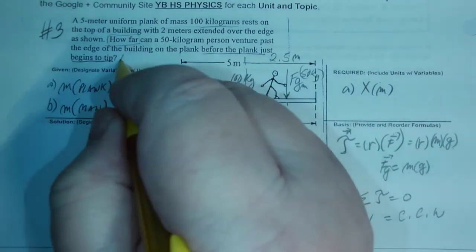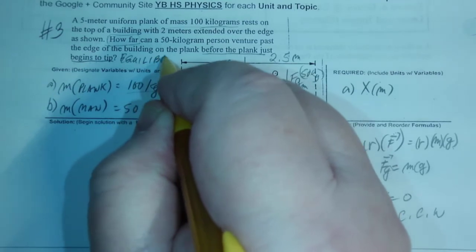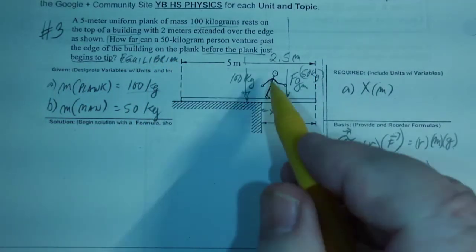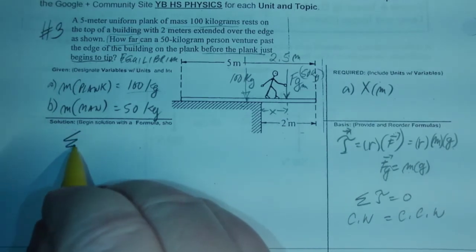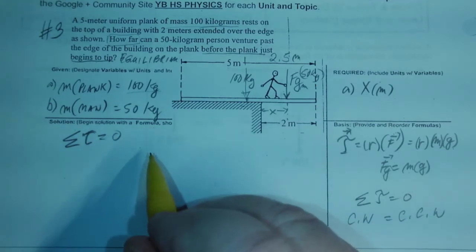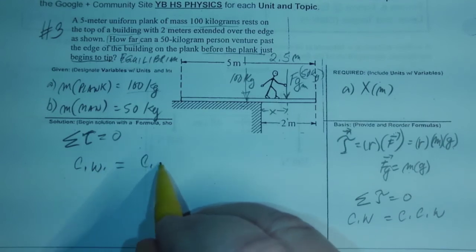That means equilibrium because it's before it tips. After it tips, it's moving, and the guy's dead. So at equilibrium, the forces of the torque are equal to zero, which means clockwise is equal to counterclockwise.